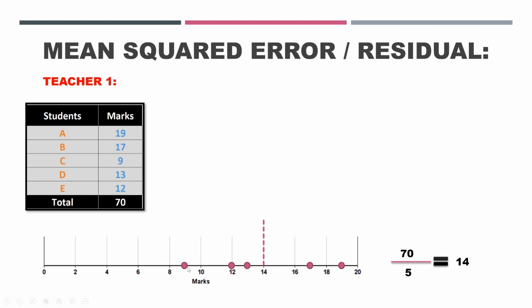So this is the 9 mark that pupil C scored, these are the 12, 13, 17, 19 marks that each pupil scored, denoted by a red dot, and he also plotted the mean value on the number line.